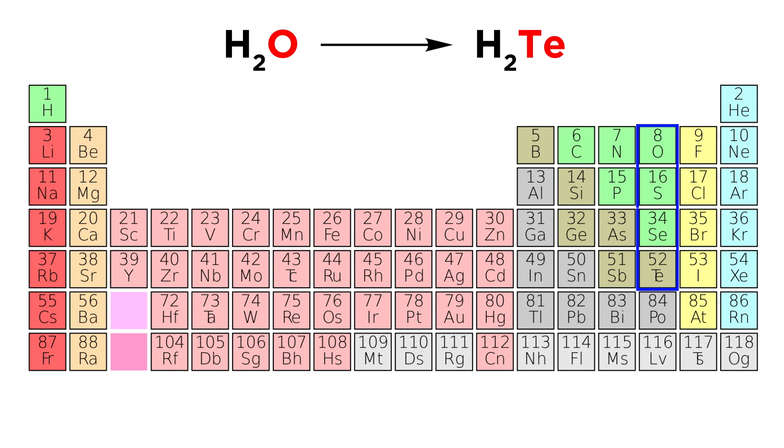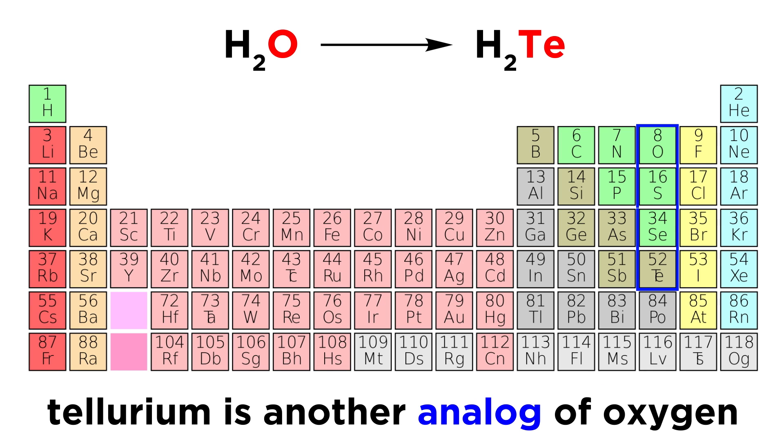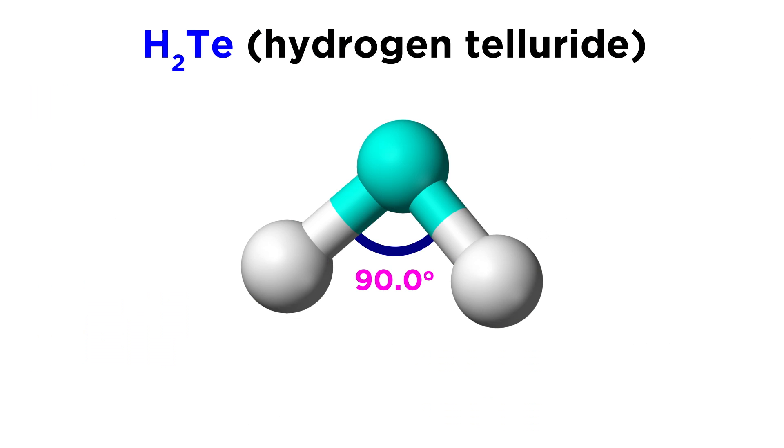Let's go even further down the group, to tellurium. This will also behave similarly to oxygen, bonding to two hydrogen atoms to form hydrogen telluride. We observe the HTEH bond angle in this molecule to be equal to precisely 90 degrees.